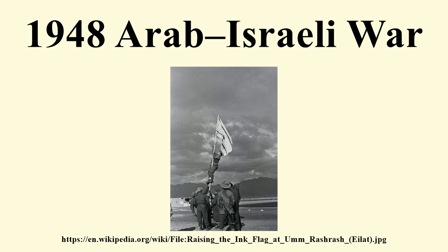Walid Khalidi notes the Yishuv had additional forces of the Jewish Settlement Police, numbering some 12,000, the Youth Battalions, and the armed settlers. On 5 December 1947, conscription was instituted for all men and women aged between 17 and 25, and by the end of March, 21,000 had been conscripted. On 30 March, the call-up was extended to men and single women aged 26 to 35. Five days later, a general mobilization order was issued for all men under 40. By March 1948, the Yishuv had a numerical superiority, with 35,780 mobilized and deployed fighters for the Haganah, 3,000 of the Stern Gang and Irgun, and a few thousand armed settlers.